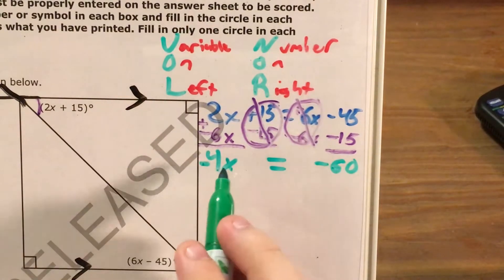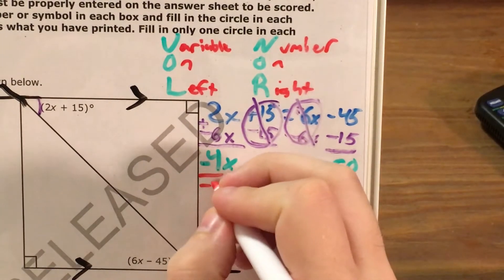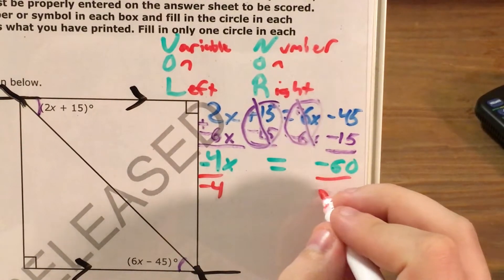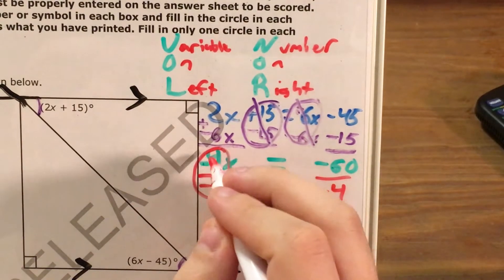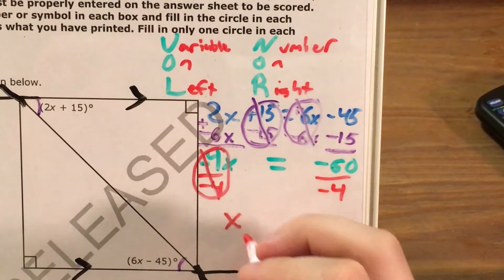So now that I know that negative 4 times some number equals negative 60, now all I have to do is divide both sides by negative 4 because negative 4x is the same thing as negative 4 times x. And we divide to get rid of times because those are opposites. Negative 4 and negative 4 will cancel each other out and I'm just left with x.